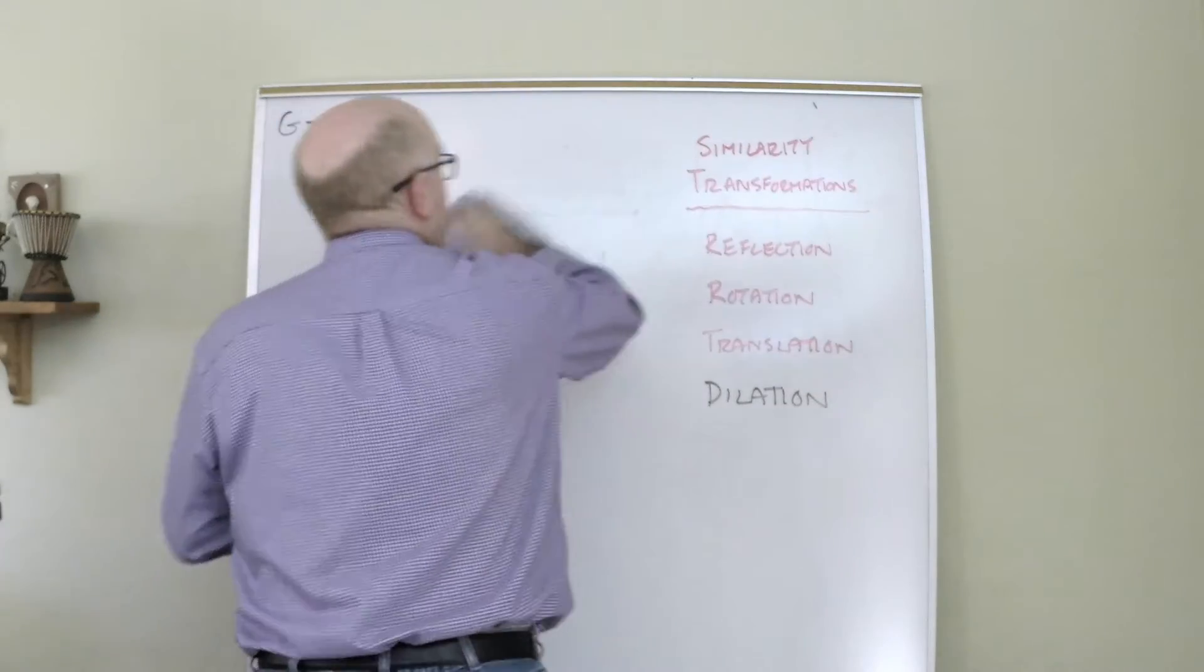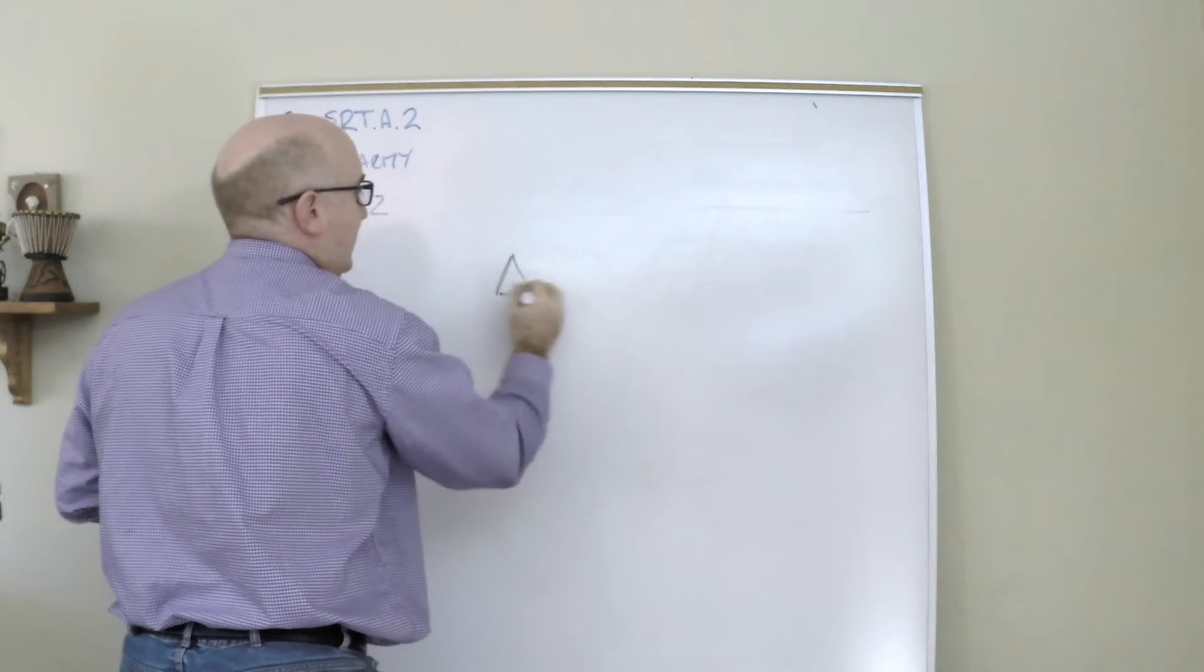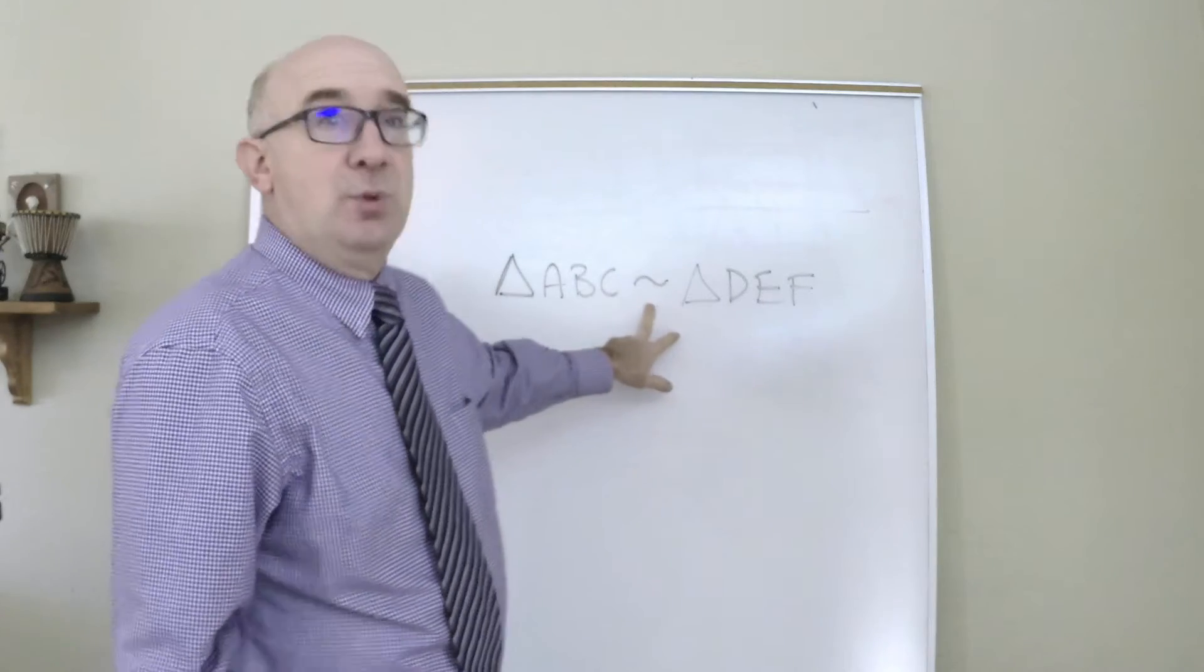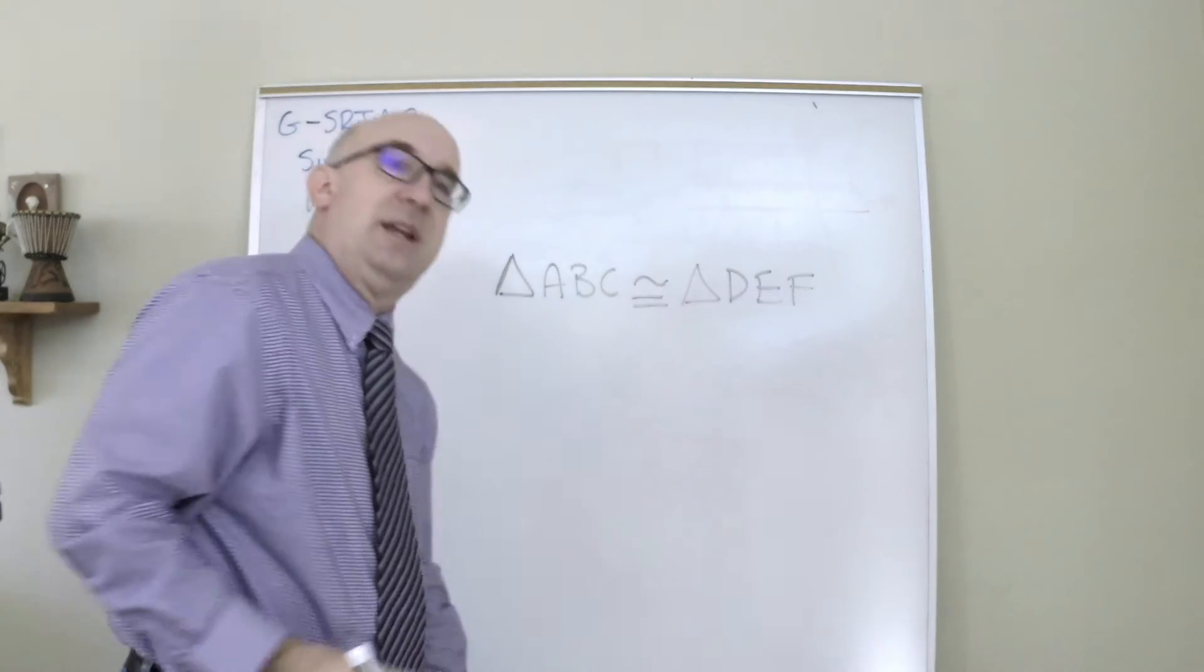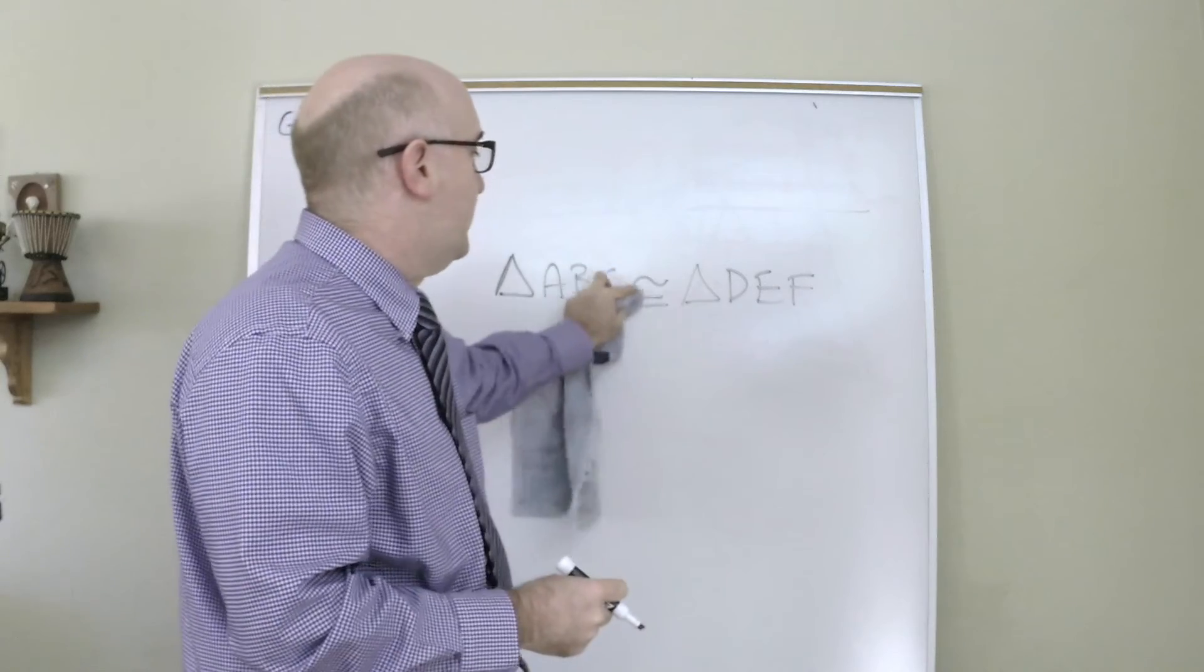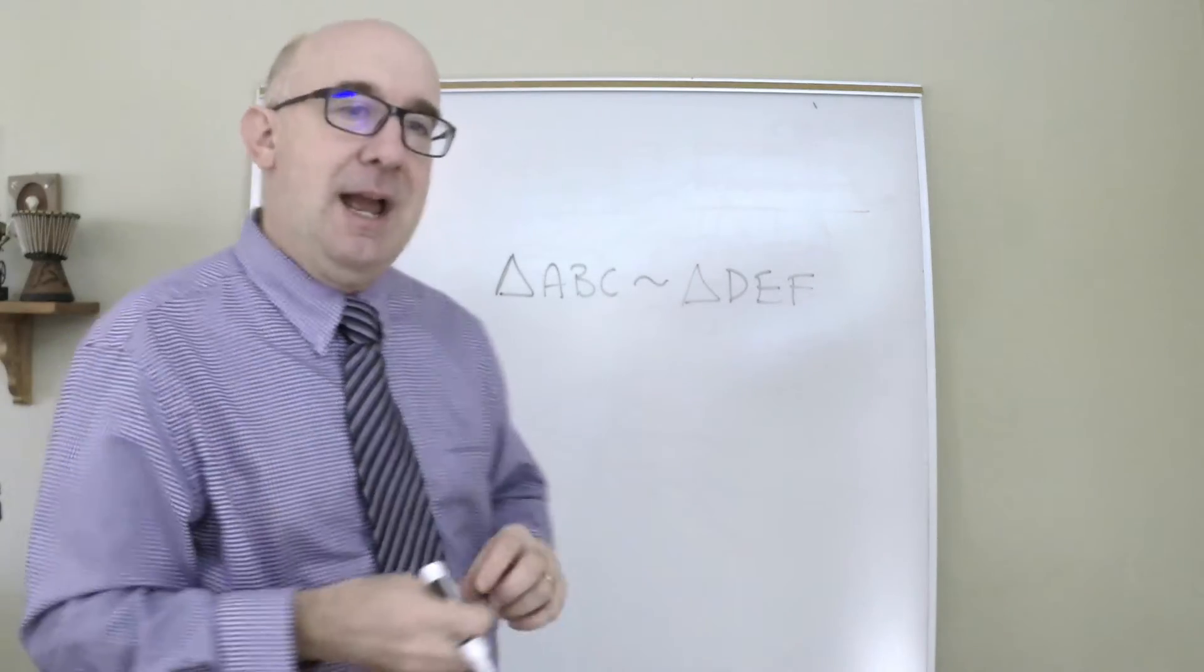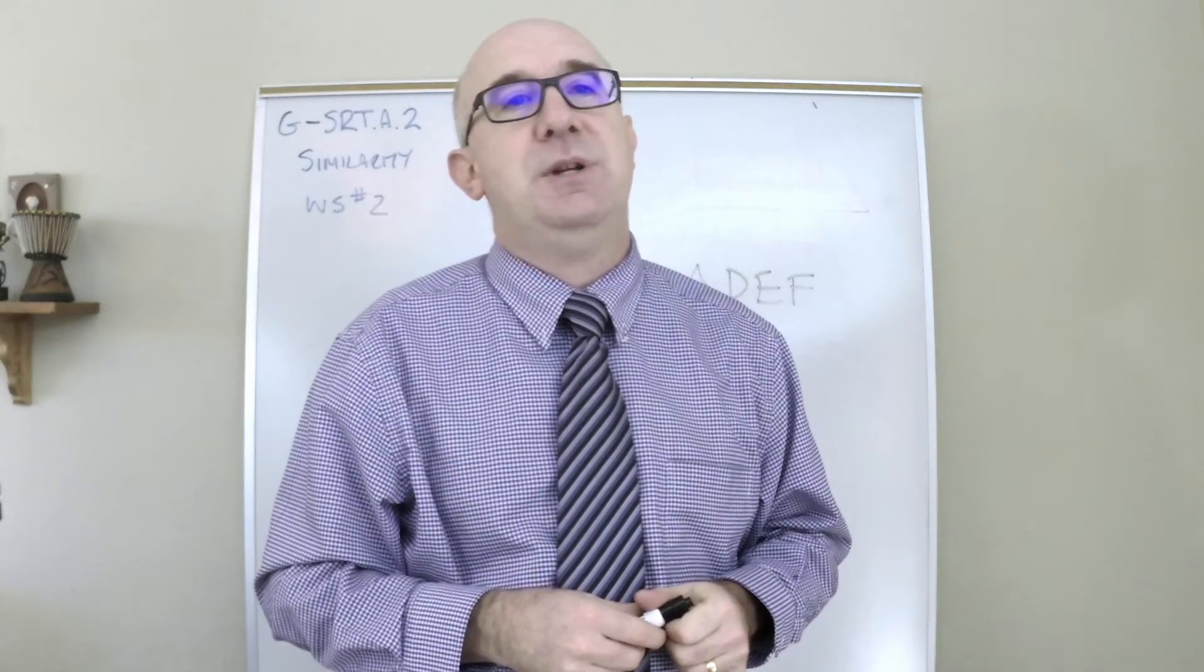The last thing I just want to talk about is a similarity statement. A similarity statement might say triangle ABC is similar to triangle DEF. Now you've seen this symbol before. It was in congruence, but the congruence symbol had the equals there because it represented both equal sides and same shape. So when we take that away, the sides can now differ but be proportional, but the shape would maintain itself. And so let's take a look at some examples here of how we would establish similarity between two shapes.